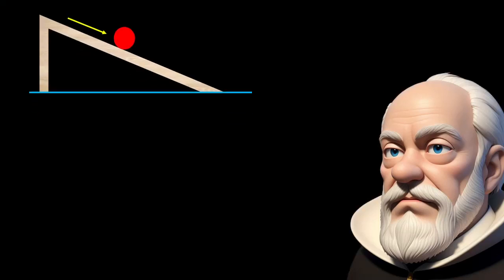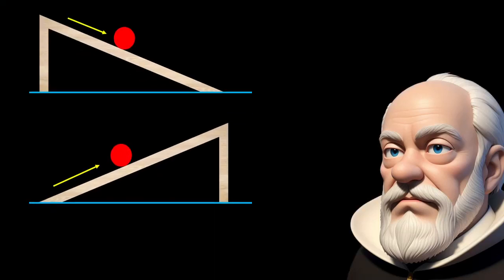1. Objects moving down an inclined plane accelerate. 2. Objects moving up an inclined plane retard. 3. Motion on a horizontal plane is an intermediate situation.